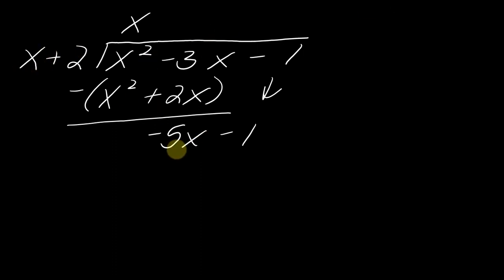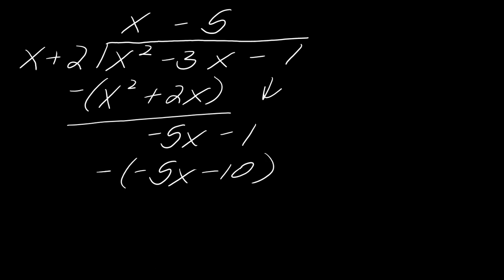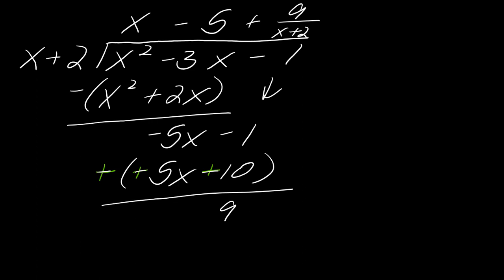What do I multiply x by to get to negative 5x? That would be negative 5. Now I take negative 5 times all of this: negative 5 times x is negative 5x, negative 5 times 2 is negative 10. Then I subtract this whole result off. If the minus signs kind of freak you out — which they freak me out — I like to just rewrite that as all addition so I don't forget. Now my 5x's drop out. Negative 1 plus 10 is 9. So you have a remainder of 9 over x plus 2. The sign is positive because 9 is positive; 9 goes over whatever you divided by.